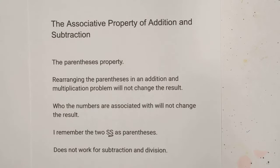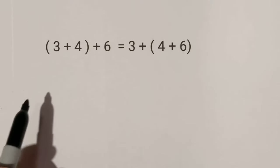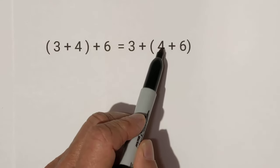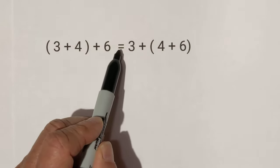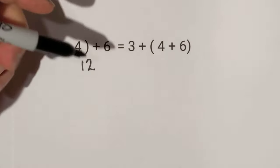Let's look at a couple examples. The first example is addition. Notice here the 4 is associated with the 3. On this side, the 4 is associated with the 6, but they're equal.